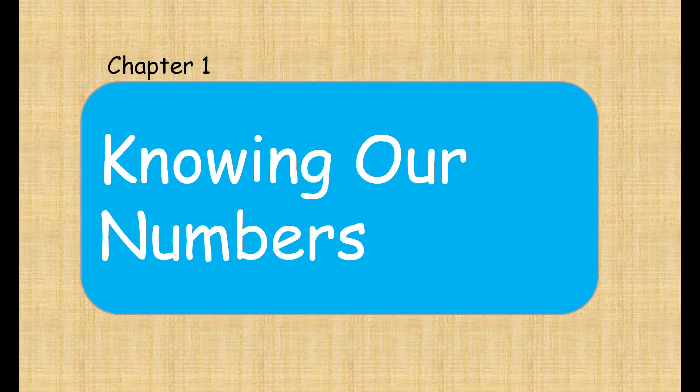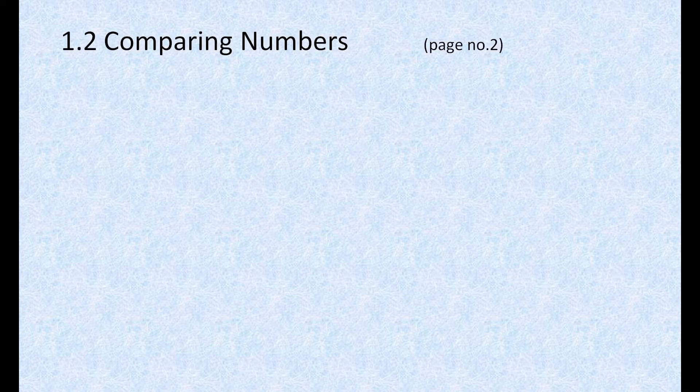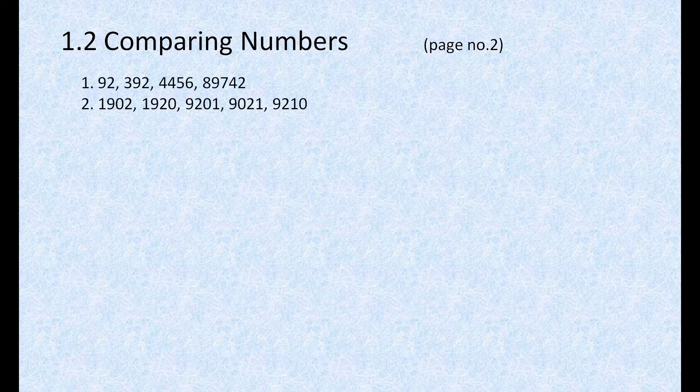You all have the first chapter as 'Knowing Our Numbers.' Let's see which all questions you have in this chapter and let's start solving. On page number 2, you have the topic as 'Comparing Numbers.' Here, we have to compare the numbers in the given series. First, they have given two examples and told us to find out the greatest and smallest number from the examples.